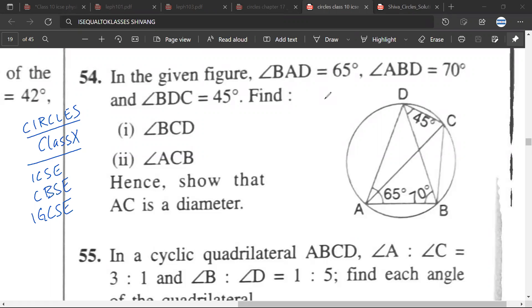So Mr. Siwan, circles, class 10th. In the given figure, angle BAD is equal to 65 degrees. So this BAD is 65 degrees.